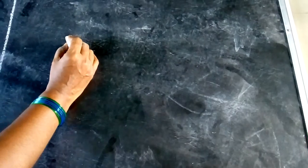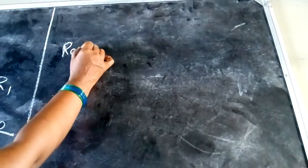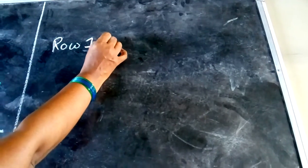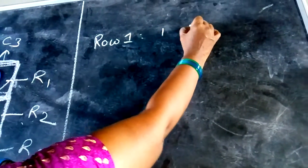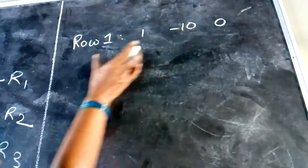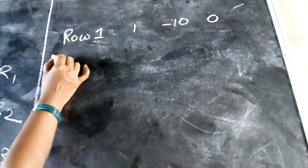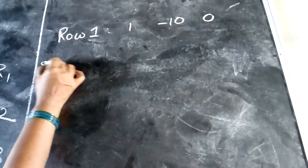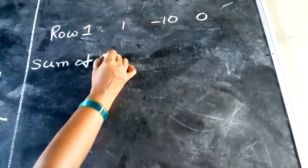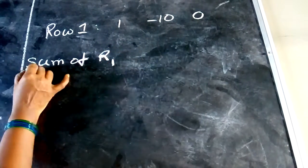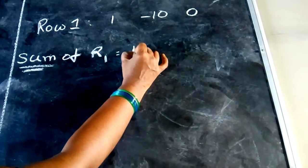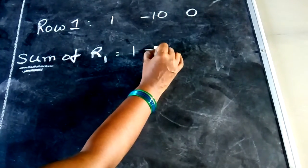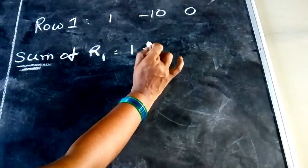Now students, take row 1. What numbers are there in row 1? 1, minus 10, 0. Take only row 1. Now, sum of row 1. Sum means addition. So take the first number: 1, plus next number minus 10, plus 0.